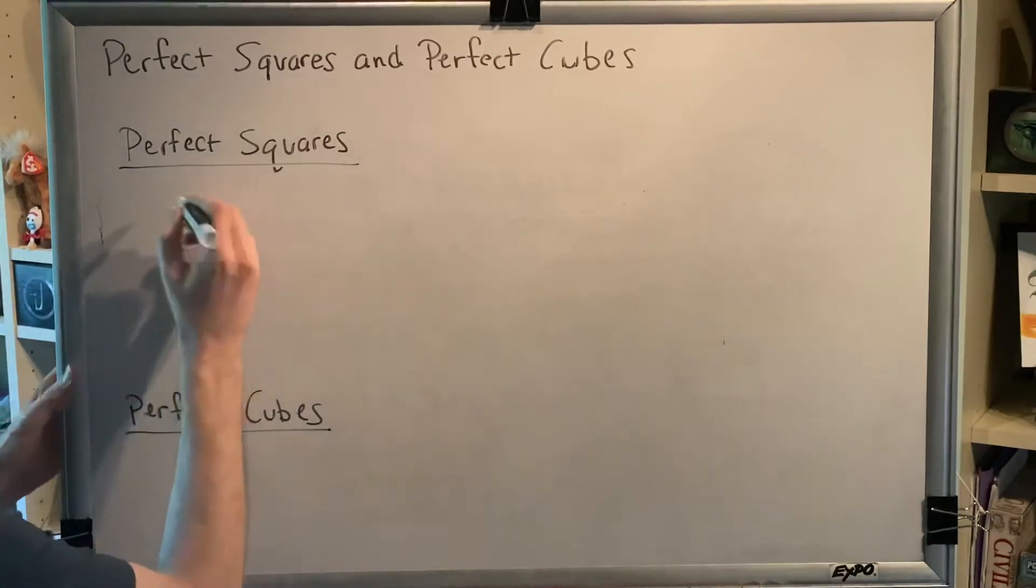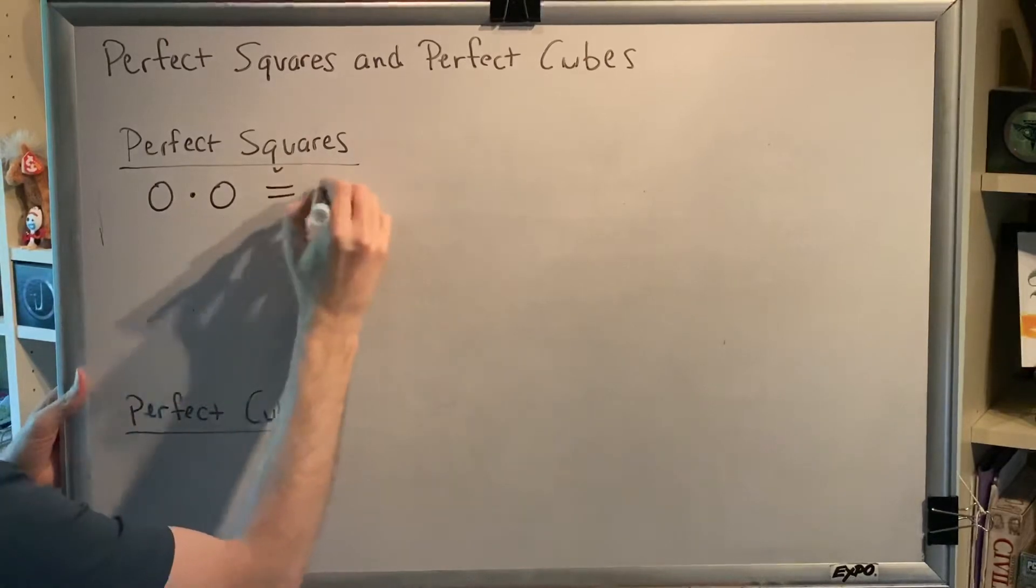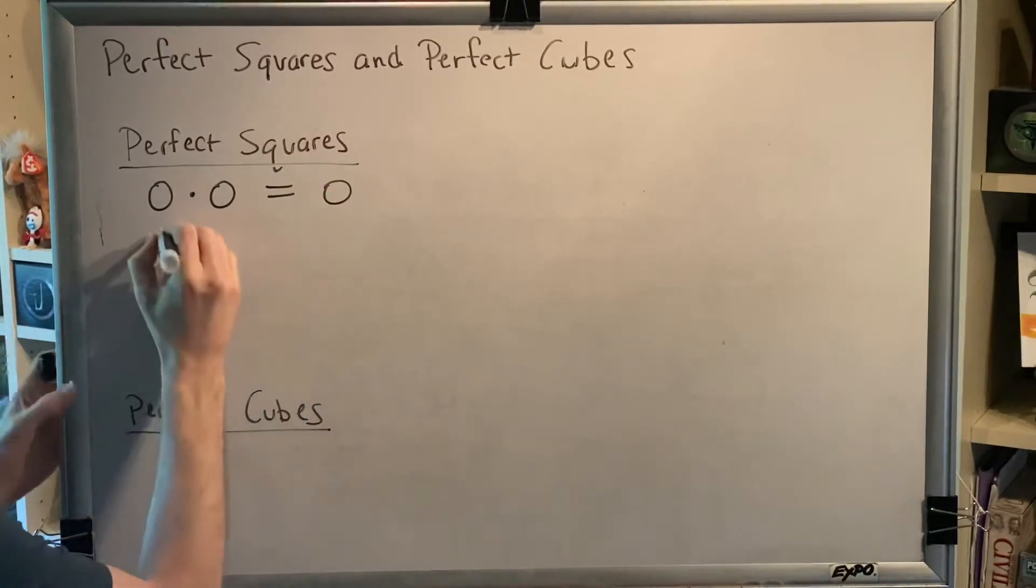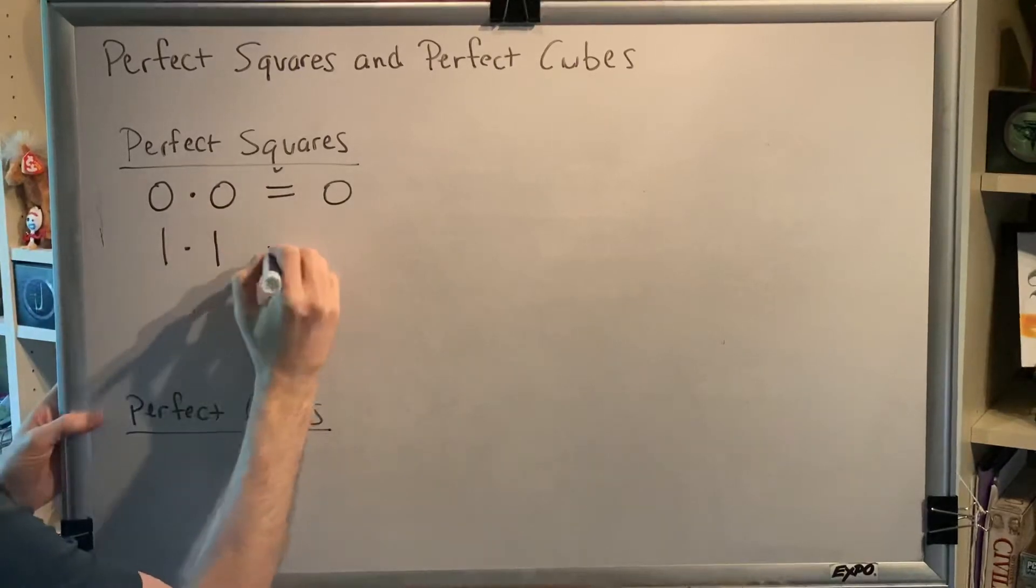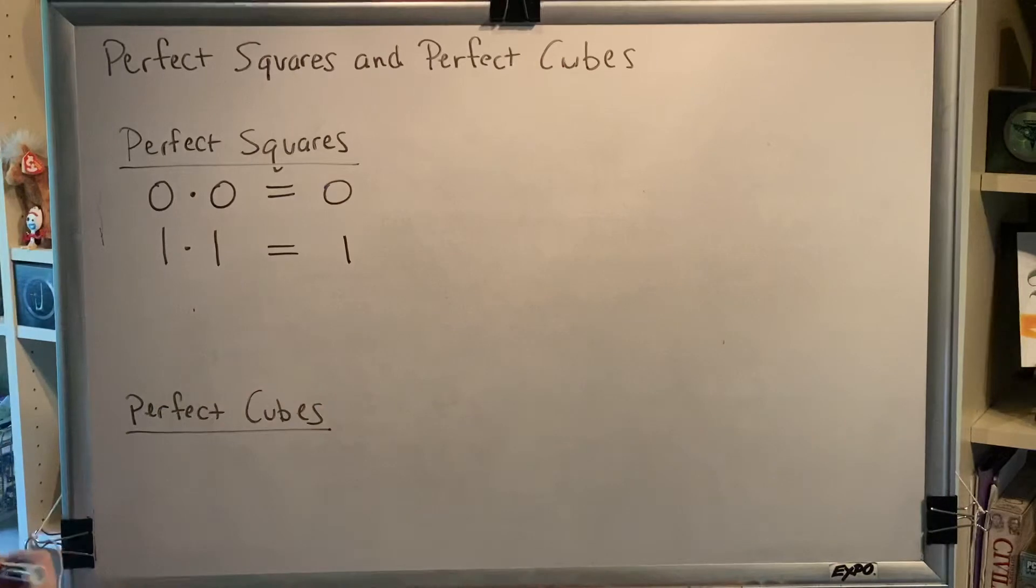For example, zero times itself exactly two times equals zero. That makes zero a perfect square. One times itself, a total of two times, equals one. That makes one a perfect square.